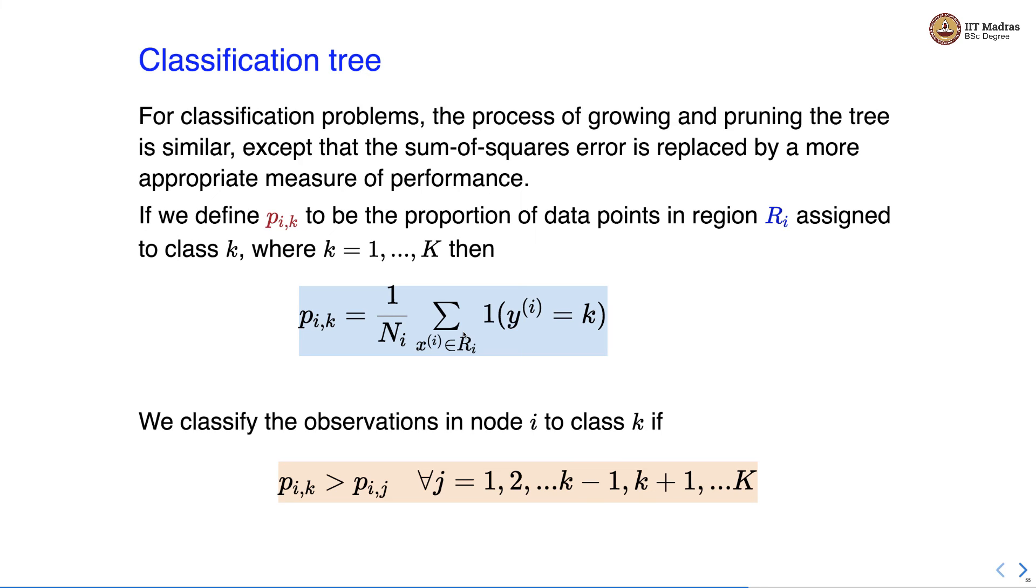We classify the observations in node i to class k if pik is greater than all other pijs for j equal to 1 to k. So if the probability of class k is higher than any other class then we assign class k to node i.